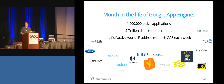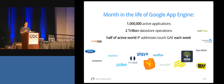This is a typical month in the life of App Engine: we have a million active applications running every month, more than two trillion datastore operations. And my favorite statistic — half of all active IP addresses in the world touch an App Engine service every week. These include user-facing applications, servers talking to each other, mobile applications connecting to a backend like I'll be talking about today.